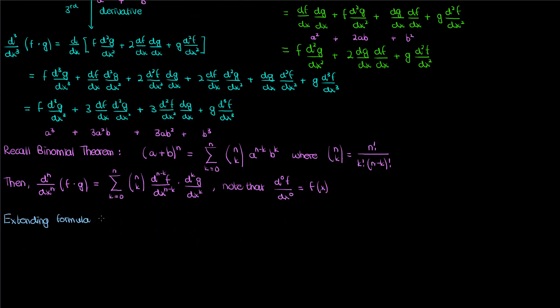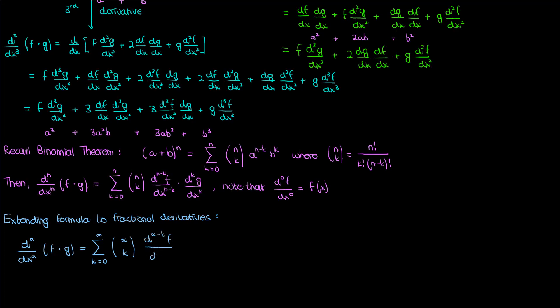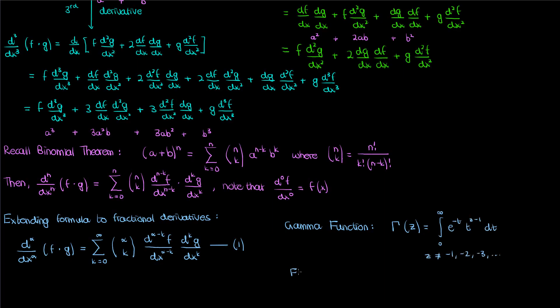If I now extend the same formula to fractional derivatives of order alpha, then n inside the summation turns into alpha while k is now summed over to infinity — I'll call this equation 1. Instead of factorials for alpha choose k, we now need to use the gamma function.